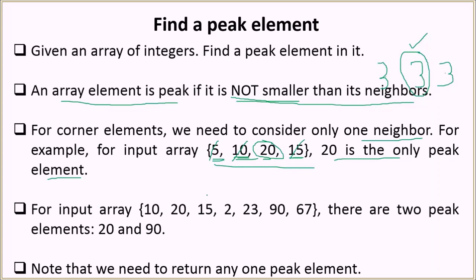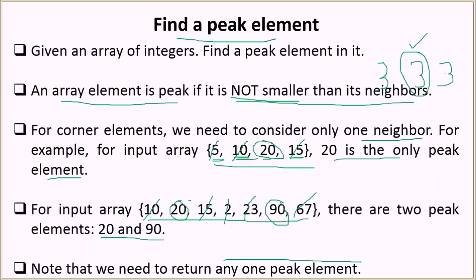We have another example here with 20 and 90 as the peak elements. 67 cannot be a peak element because 90 is greater than 67. 23 has a right neighbor greater than it. 2 has both neighbors greater than it. 15 and 10 both have 20 as a neighbor which is greater. So 20 and 90 are the only peak elements. It is interesting to note that the problem asks us to find a peak element — there may be multiple, but we have to return any one.